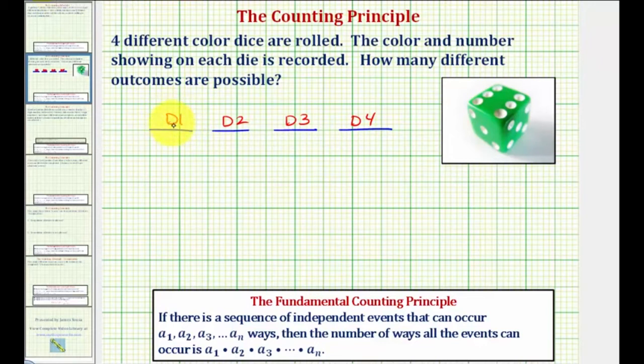So now the number of ways this first event can occur would be six, since again, it's a result of one roll of one of the die. So we'd have six times, well each roll can occur a total of six ways, so we'd have six times six, times six, times six.